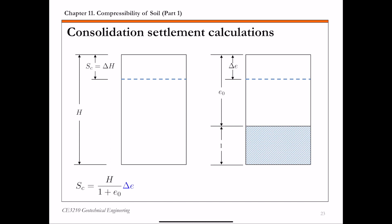The primary equation we're going to use to calculate this consolidation settlement, which we'll call SC, is shown on this slide at the bottom. In this expression, H is the height of the consolidating layer — the height of the clay layer. E naught is the initial void ratio of the consolidating layer, typically measured using a representative sample taken at the middle of the clay layer. The highlighted term delta E is the change in void ratio, which can be related to the change in effective stress sigma prime through some moduli obtained from a 1D consolidation test.